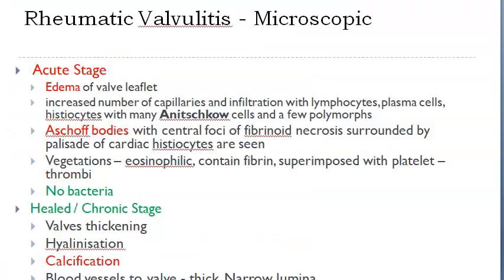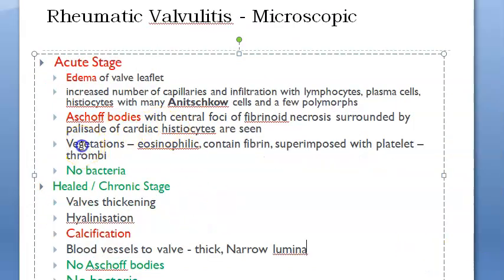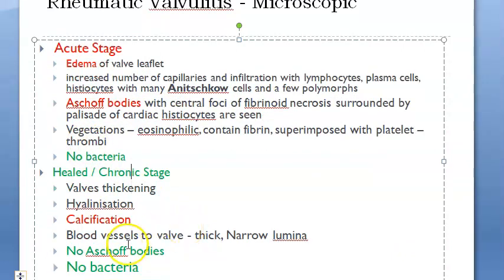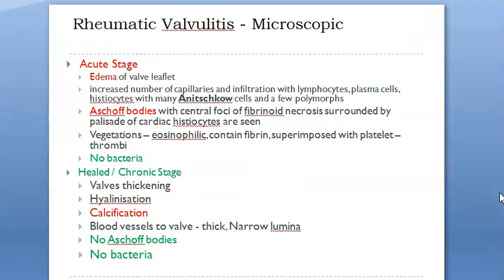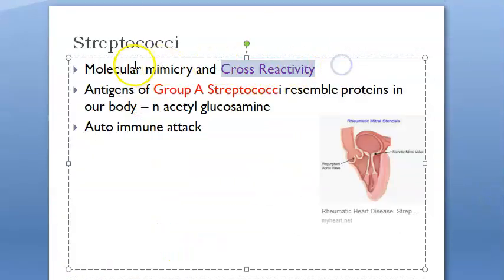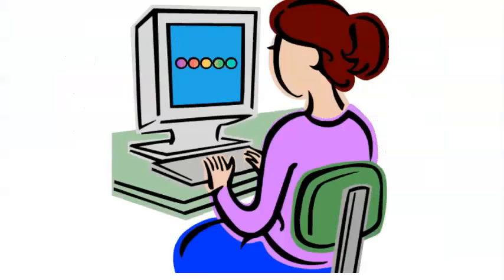Microscopically, you will see Aschoff nodules and Aschoff bodies, plus vegetations. In the healed or chronic stage, there is thickening of the valves with no Aschoff bodies. There is no bacteria at any stage — it is purely the result of cross-reactivity and molecular mimicry, where the protein on streptococcus mimics the protein on our heart.